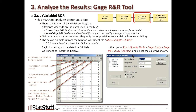When you select this option, the dialog box that pops up in Minitab looks like this. For part numbers, reference the part num column. For operators, it's the operator column. For measurement data, select the output from those operators. By default, we're going to accept the ANOVA method of analysis. Click OK, and then we're going to look at the output results and how you interpret those results.